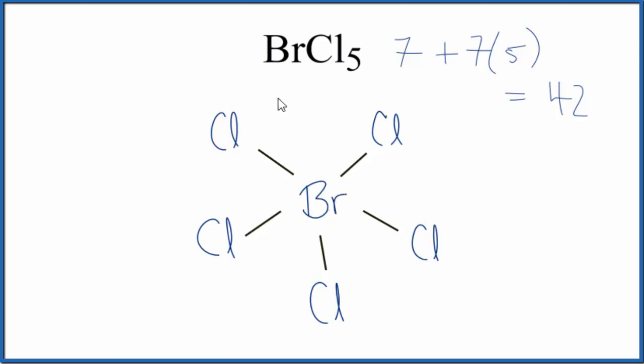Next, let's complete the octets around each chlorine atom. At this point, we've used a total of 40 valence electrons. We have each chlorine with an octet.